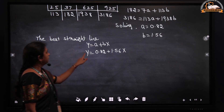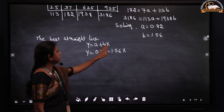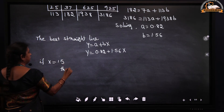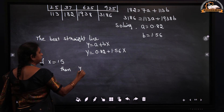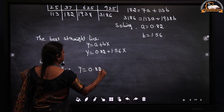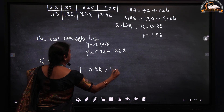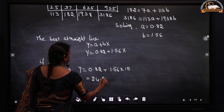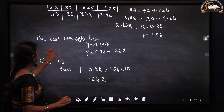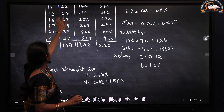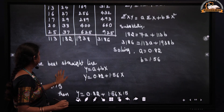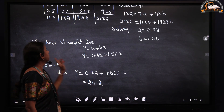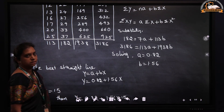As mentioned earlier, we can get the best estimate value of y for any specified value of x. Suppose x = 15, then the best estimate of y = 0.82 + 1.56 × 15 = 24.2. From the data we have y = 24 when x = 13 and y = 27 when x = 16, so the estimated value of 24.2 when x = 15 lies between 24 and 27, which is consistent.